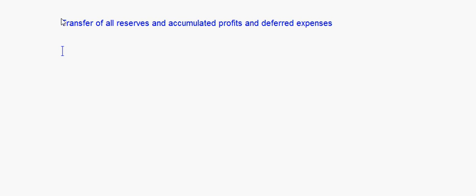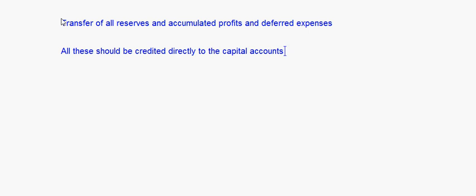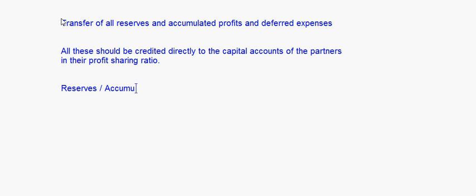Now, if there are any reserves, accumulated profits, or deferred expenses given in the balance sheet, all these should be credited directly to the capital accounts of the partners in their profit sharing ratio. The journal entry is: Reserves or Accumulated Profits or Deferred Expenses (whatever it is) to All Partners' Capital Account, again in the profit sharing ratio.